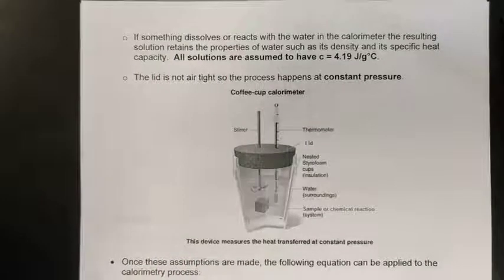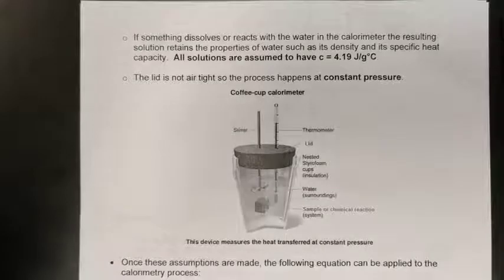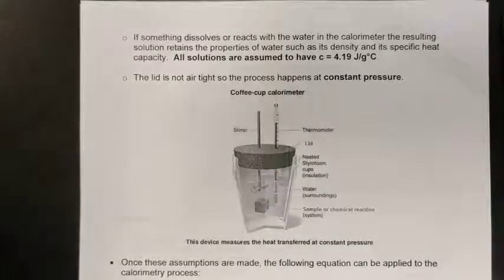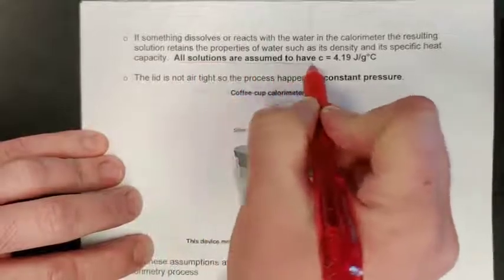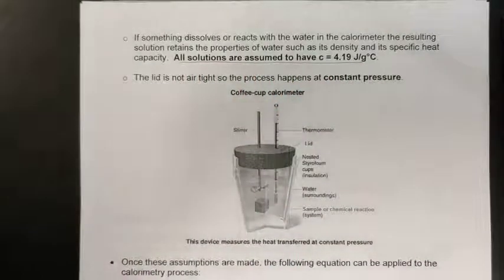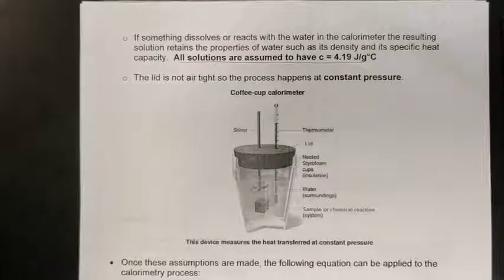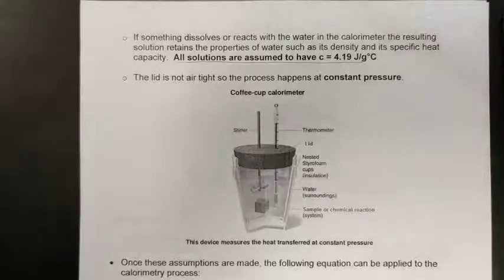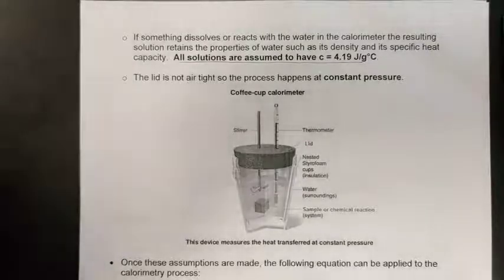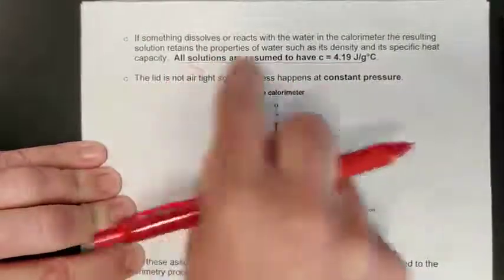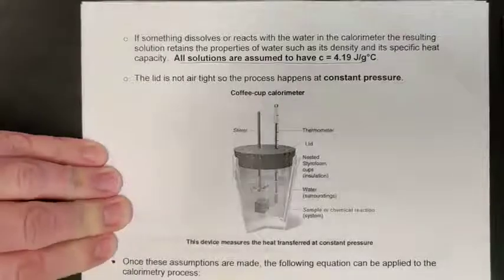Most chemical reactions we do take place in solution — this is why we call chemistry a wet science. Most of our solutions are fairly dilute, meaning they are mostly water, so it is safe to assume your solutions have the same specific heat capacity as plain water. If they do not, we will tell you a new specific heat capacity. A good example is antifreeze (ethylene glycol) in a car radiator — ethylene glycol changes the specific heat capacity of water. Unless told otherwise, all solutions are assumed to have the specific heat capacity of water: 4.19 J/g·°C.